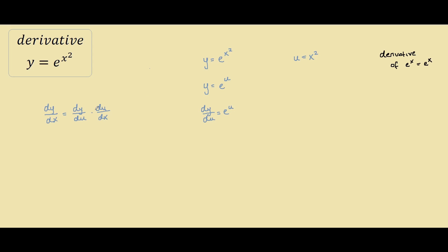Now we've found dy/du, our next job is to find du/dx. So du/dx equals 2x. Now we have everything, we can just plug it into our formula: dy/dx equals e to the u times du/dx, which is 2x.